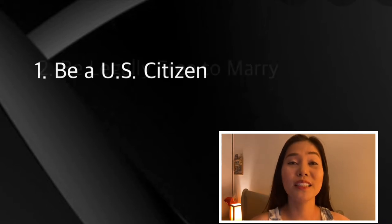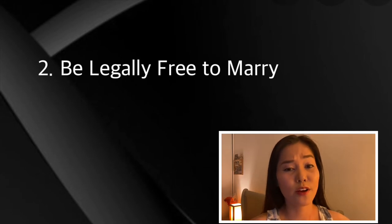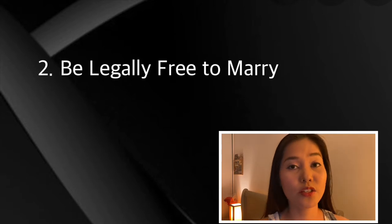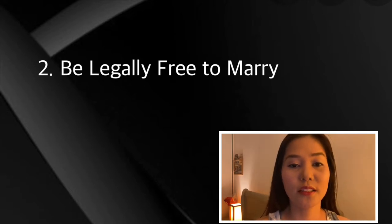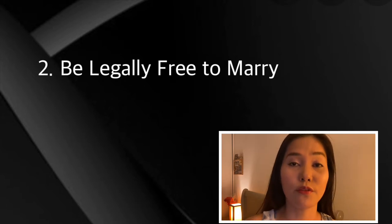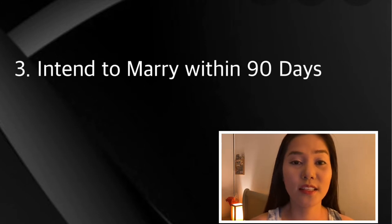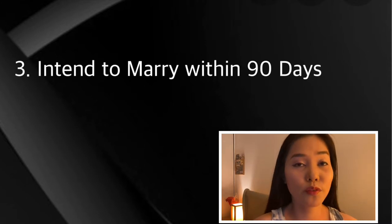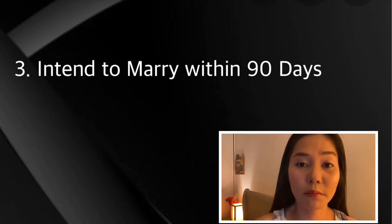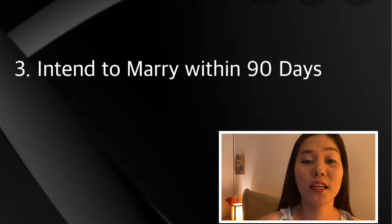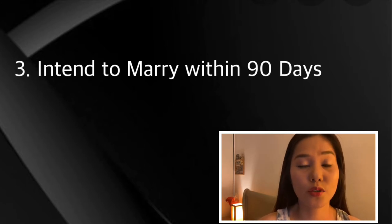Number two, be legally free to marry. If either of you were previously married, you will need to provide proof that your marriage was legally terminated, such as a divorce decree or death certificate of the prior spouse. Number three, intend to marry within 90 days. You need to provide proof that you seriously intend to get married. The easiest way to accomplish this is for both of you to write a statement of intent to get married and attach them to your I-129F petition.